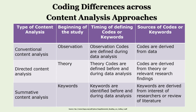Conventional content analysis looks at observation — the examples shown here were observational. In directed content analysis, you go back to your literature closely and create keywords based on theory, then design your codes accordingly. In summative content analysis, you derive keywords based on your interest and other researchers' literature and use that for analysis. These three approaches differ in how we code and what our basis for coding is.